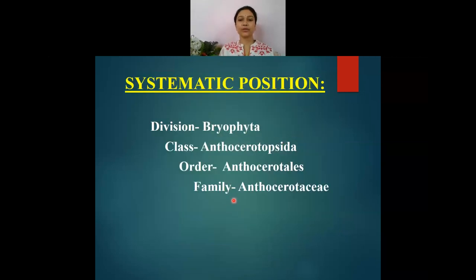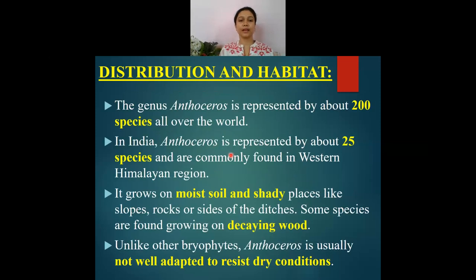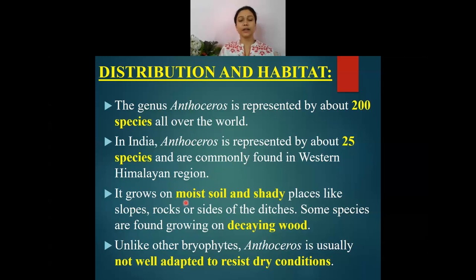Systematically, Anthoceros belongs to the family Anthocerotaceae, order Anthocerotales, and the class Anthocerotopsida under the bryophytes. Members of this class are commonly known as hornworts. This genus Anthoceros has about 200 different species distributed all over the world. In India it is represented by about 25 different species, which are mostly confined to the western Himalayan region.